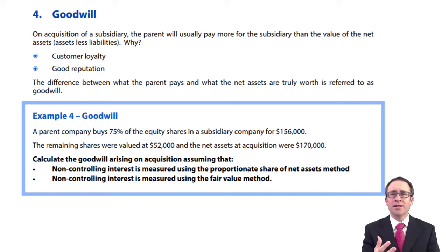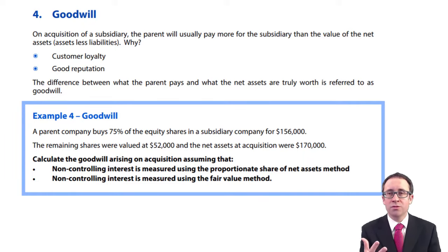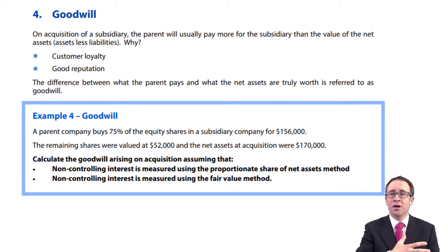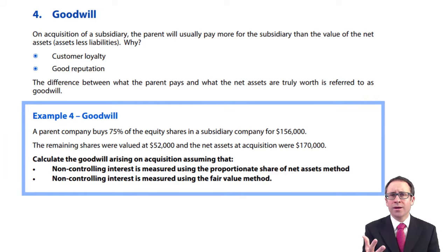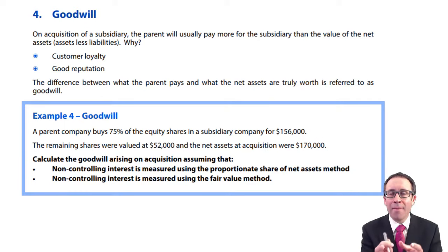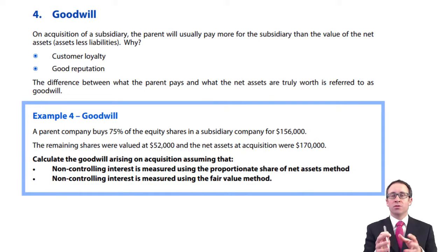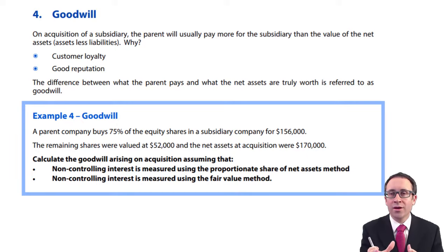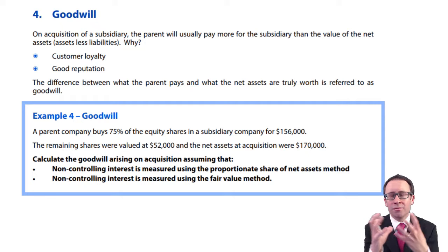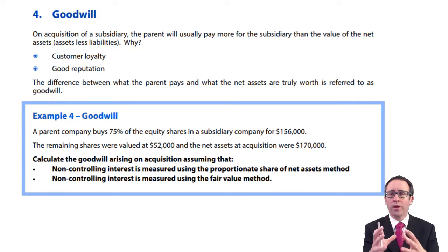Similarly, the reputation and brand associated with the subsidiary won't be recognized in the subsidiary's individual accounts because we don't know how much to measure it at — so it's not recognized in S's books. But because we are now paying an amount on acquisition of the subsidiary, we can recognize these assets, and they're going to be recognized and consumed within this asset called goodwill.